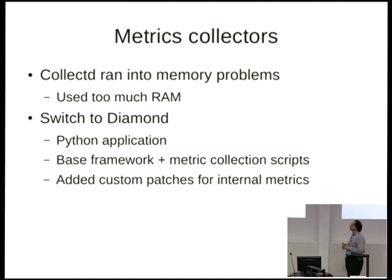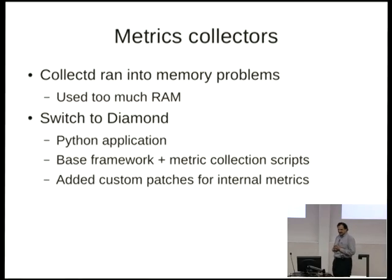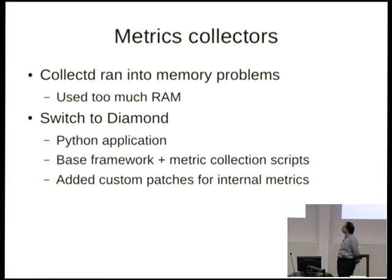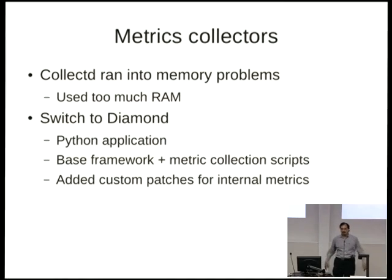We started off running collectd on the nodes, but OOM is not your friend. We switched to Diamond, which is Python-based but didn't kill our boxes with too much memory. The collectd bug has since been fixed, but that was too late for us. We have custom patches into Diamond for internal metrics, and some patches that send alerts directly from Diamond straight to Nagios for alerting.